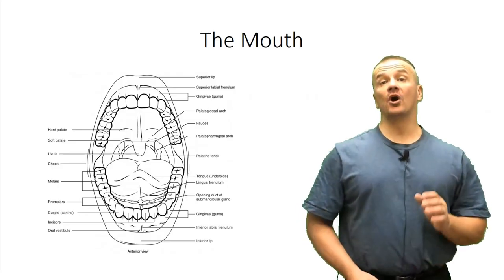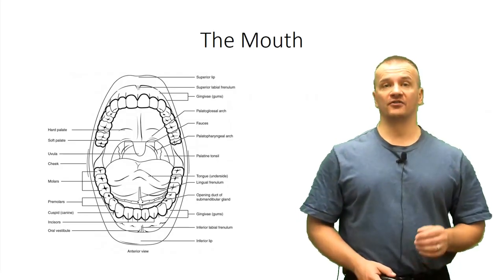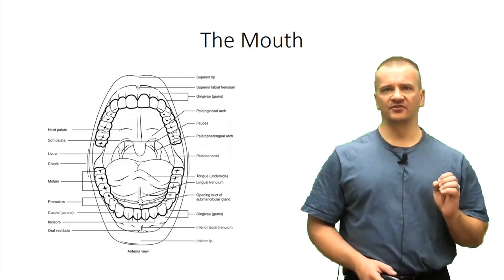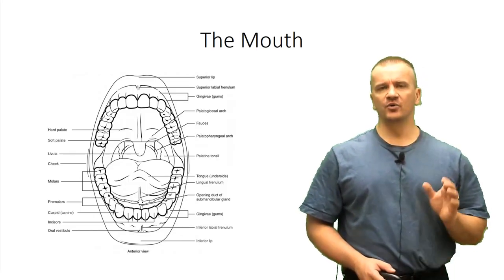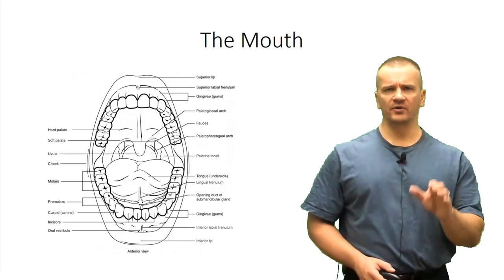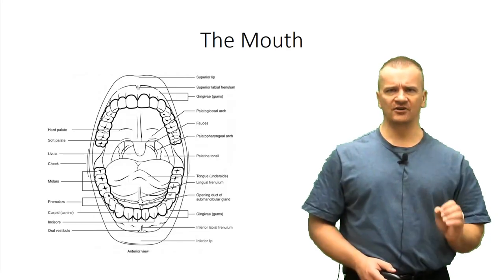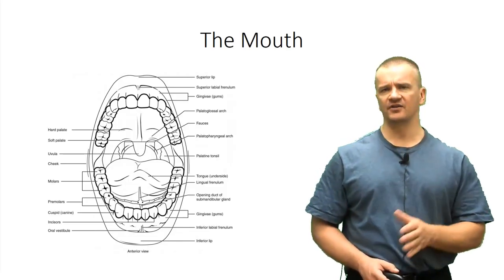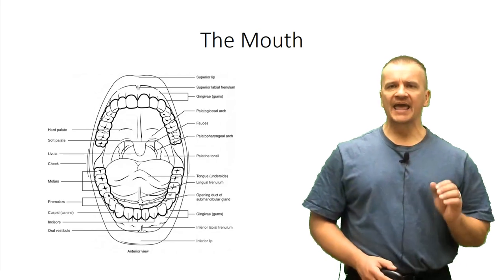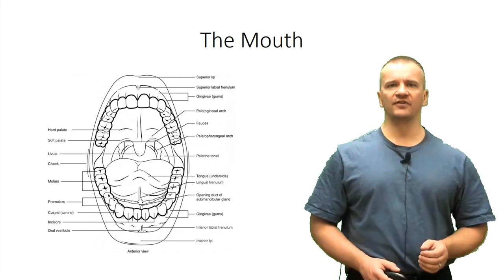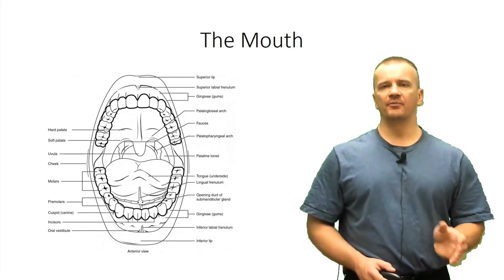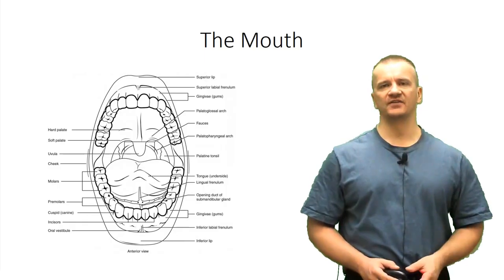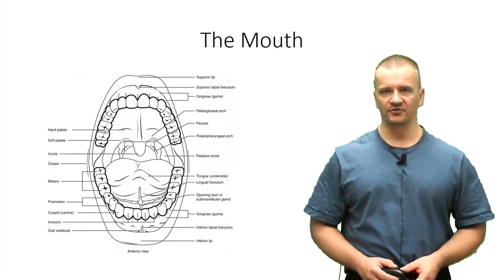Good day and welcome to this lecture session on the oral cavity. The oral cavity represents the start of the digestive system in which food is broken down through mechanical digestion before passing through the pharynx into the esophagus. It can also serve as an alternate route for air passing in and out of the lungs and in generating specific sounds during speech.